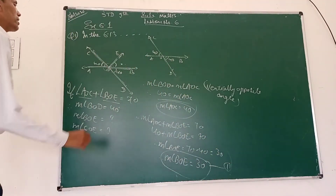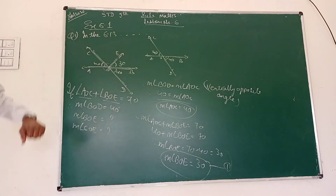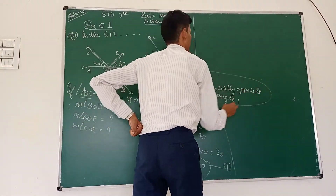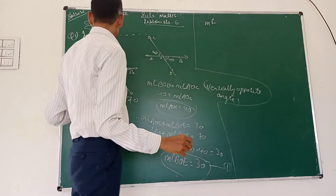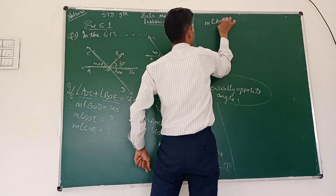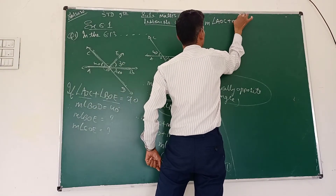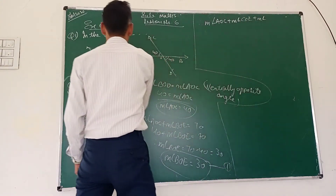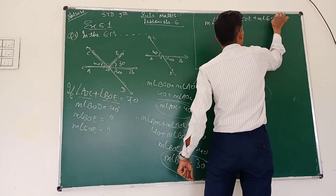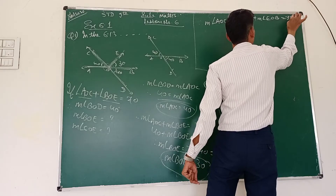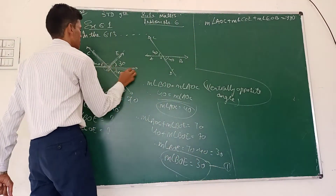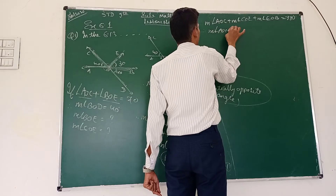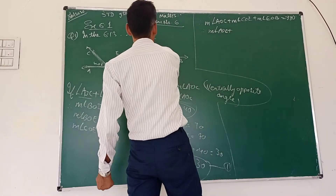Therefore angle BOE is 70 minus 40, which equals 30 degrees. We have found BOE is 30 degrees. Now to find COE: angle AOC plus angle COE plus angle EOB is equal to 180 degrees.